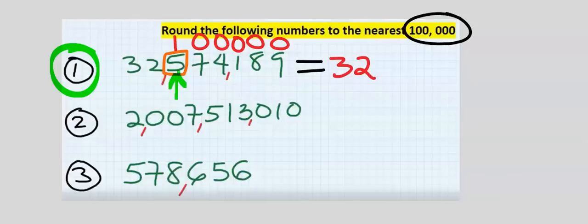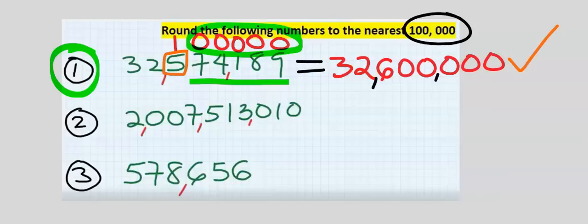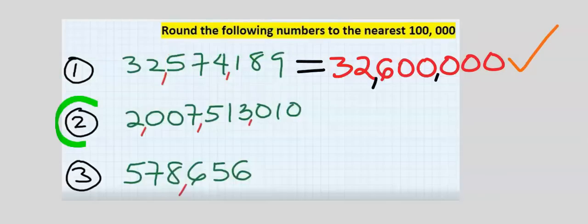Five is either modified or stays the same. However, seven can modify five to become six. So five four one becomes six, and we acquire these zeros. This becomes our answer. Next, let's consider the second question.